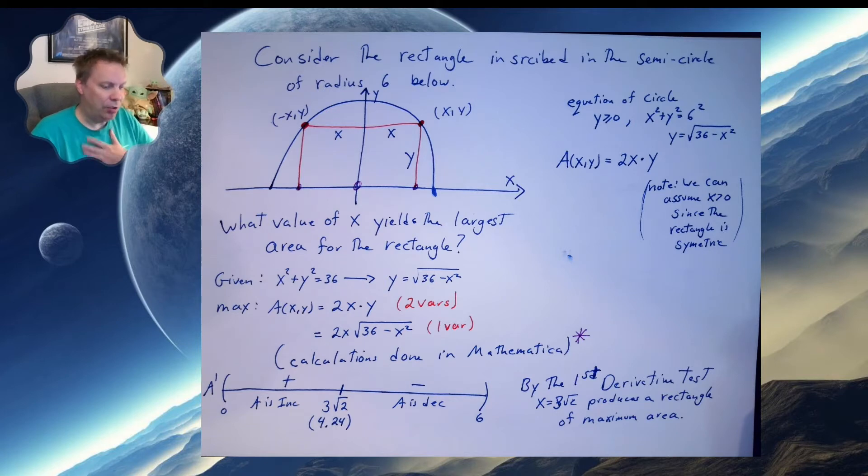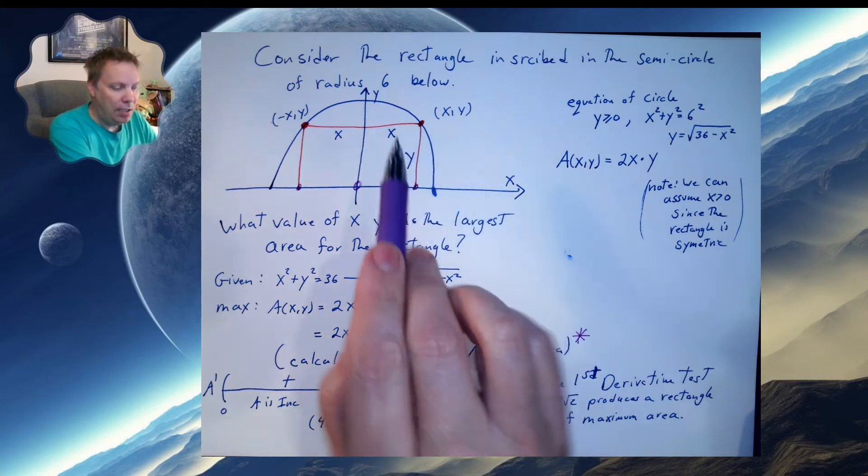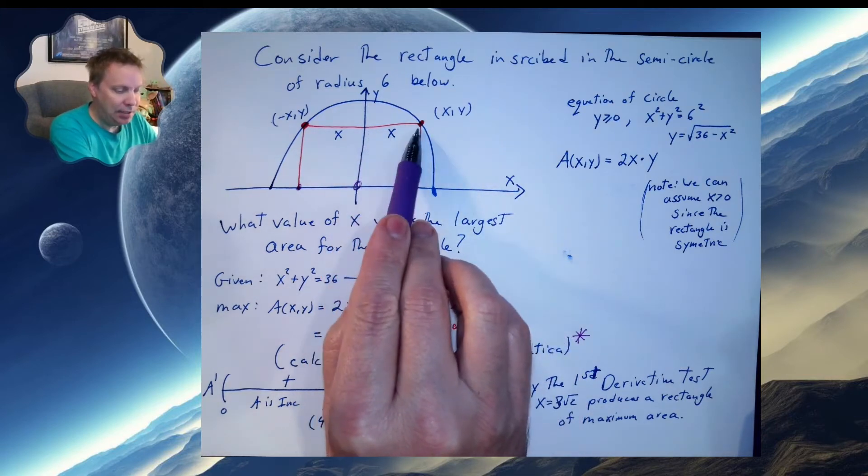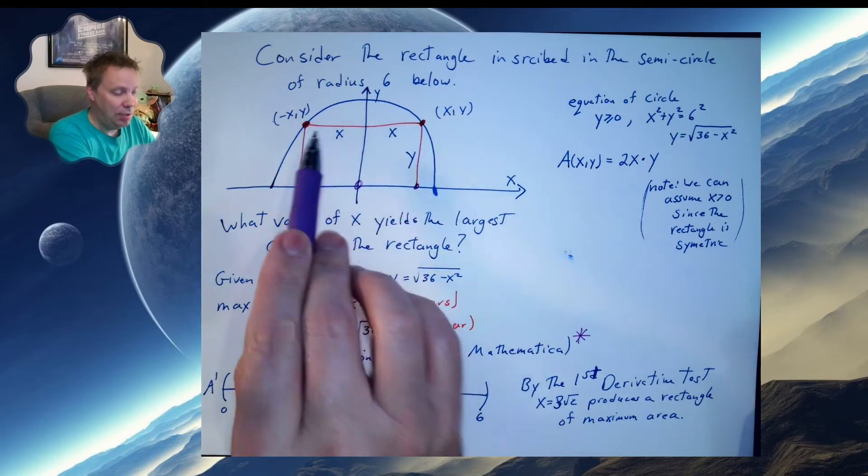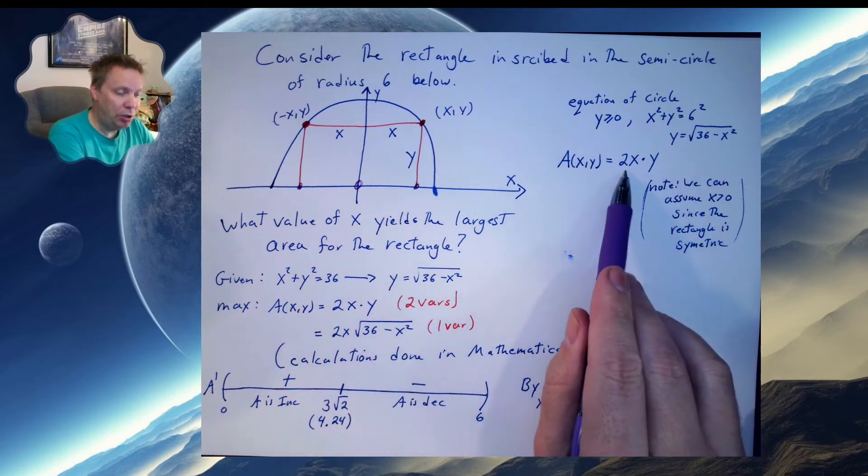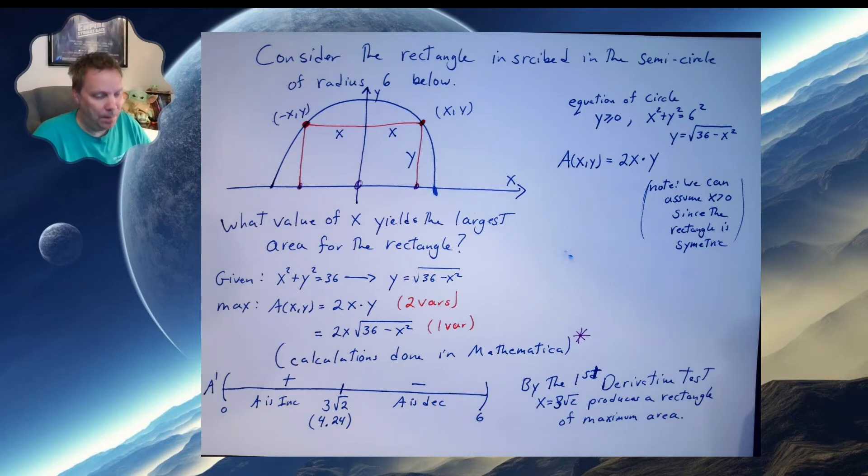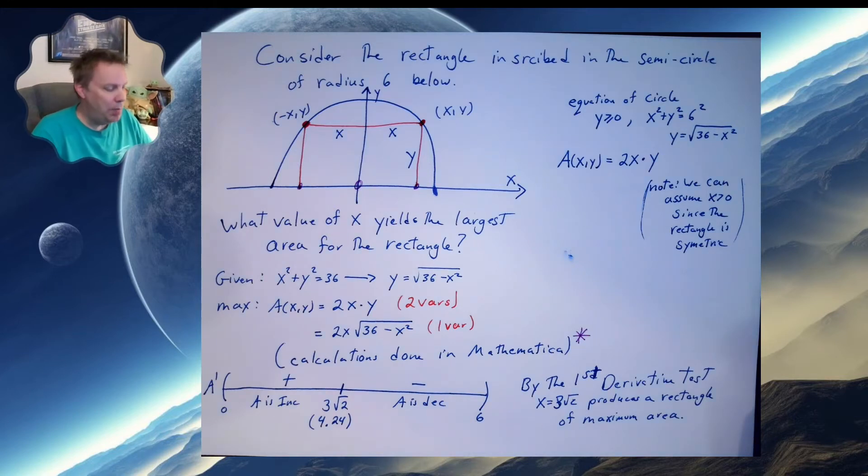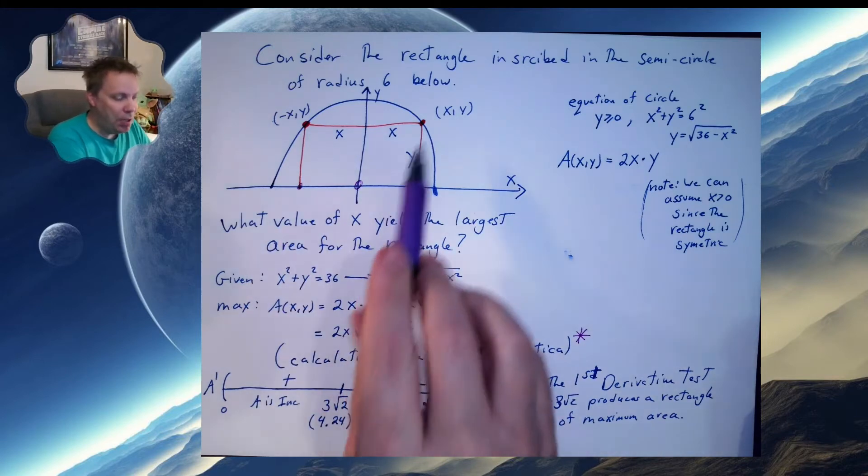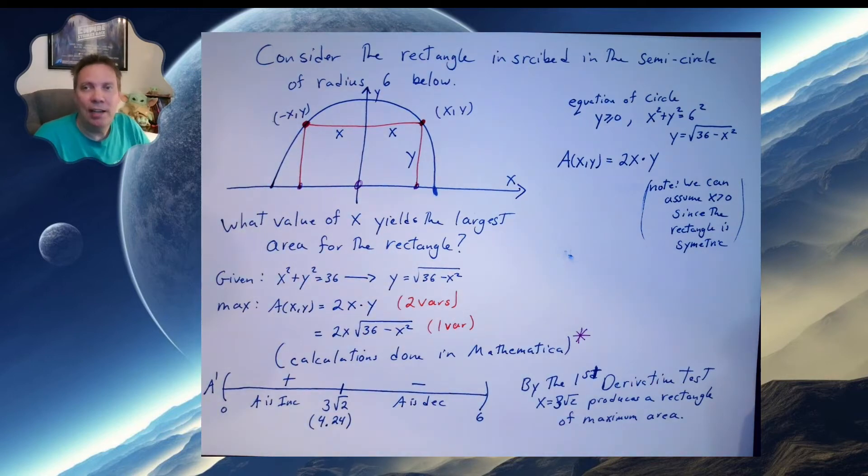Now the area of this circle, if I call this point x comma y, then this height is y, and this length here is x. But since I have a symmetry in the problem, this length is also x. So the dimensions of this rectangle are 2x by y. So in other words, the area is 2x times y. Now we can also assume that x is positive because we have a nice symmetric system over here. Because if this is x comma y, this will be negative x comma y. And I'll just get a negative answer, and it will be perfectly fine. So let's get down into some of the calculations.